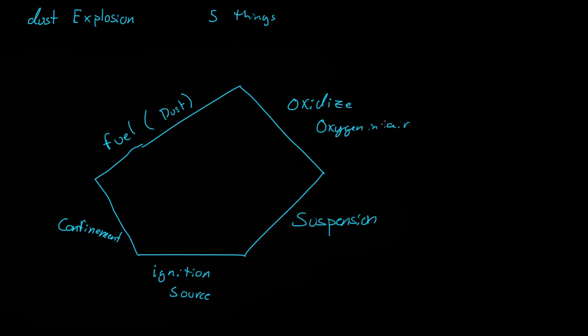So to have a dust explosion, you need fuel, an oxidizer, you need the fuel suspended, an ignition source, and you can never really control the ignition source. There will almost always be an ignition source. And finally, you need confinement.